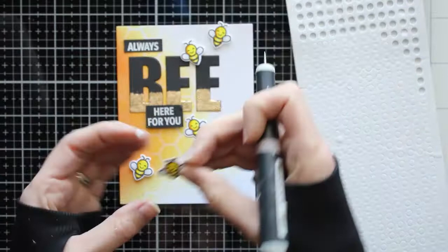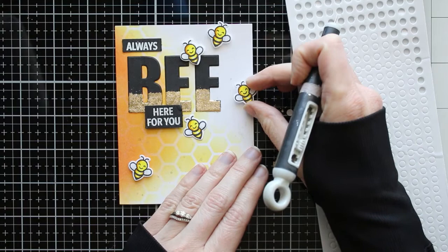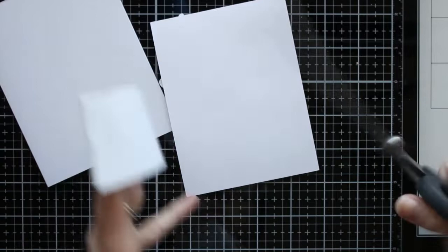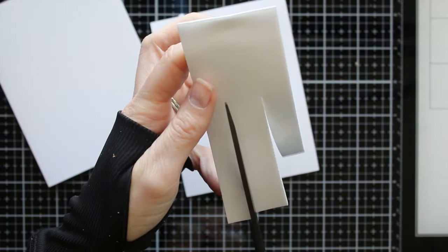I've popped up most of them. The little bee there that's kind of behind that bottom sentiment I'm going to glue down but the rest are popped up with foam adhesive. And a few of these bees I've even let them kind of hang off the side because my card front is cut a little bit smaller than my card base. Even with them hanging off the side they're going to still be on the card base itself and it's still going to fit into an envelope.